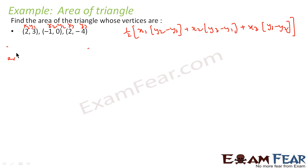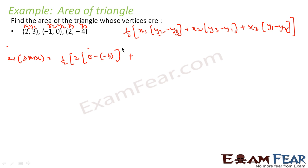So area of triangle ABC — we just use the formula. That comes out to be 1/2 into x1 = 2 times (y2 - y3), which is (0 - (-4)), plus x2 = -1 times (y3 - y1), which is (-4 - 3), plus x3 = 2 times (y1 - y2), which is (3 - 0).